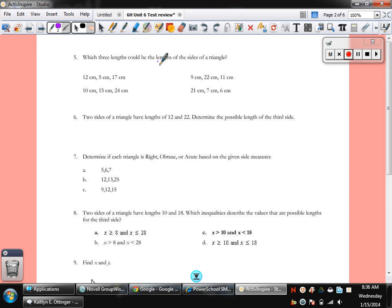Which three lengths could be the lengths of the sides of a triangle? Well, the lengths of the sides of a triangle, the smaller two sides, their sum has to be greater than the largest side. So, 5 plus 12 is 17, so that's not right. And bless you, again, if you're sneezing. 9 plus 11 is 20. That's not bigger than 22. 7 plus 6 is 13. That doesn't do it. It's this one right here. 10 plus 15 is 25, which is greater than 24.